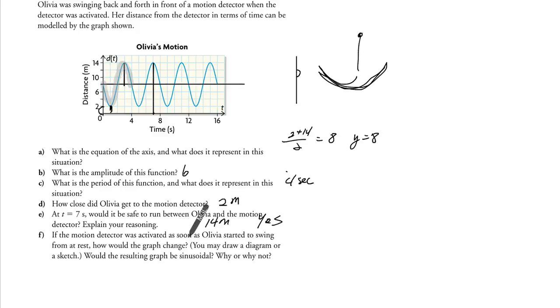If the motion detector was activated as soon as Olivia started to swing from rest, how would the graph change? From rest, she actually is exactly 8. And actually up here, what does this represent? We should actually say it's the distance from detector when Olivia is at rest.